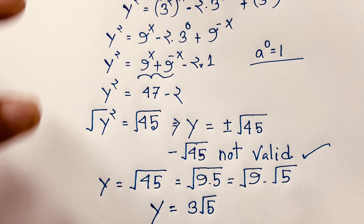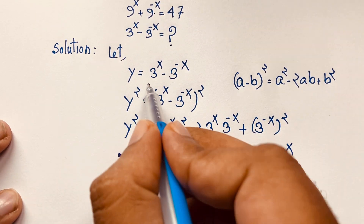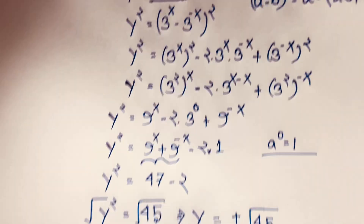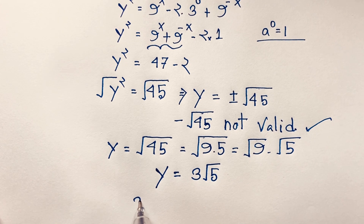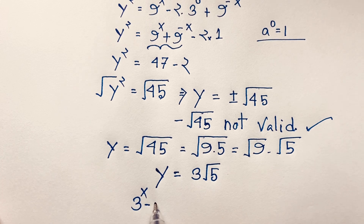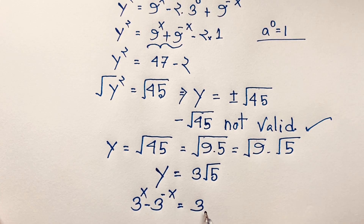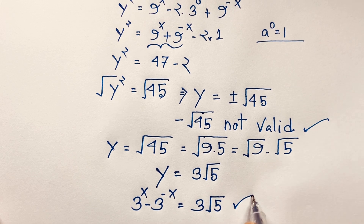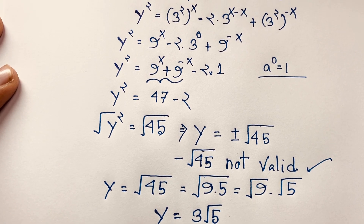So we find y is equal to 3 square root of 5. Substituting back, the expression 3 to the power x minus 3 to the power minus x is equal to 3 square root 5. This is our final answer to this interesting maths olympiad question.